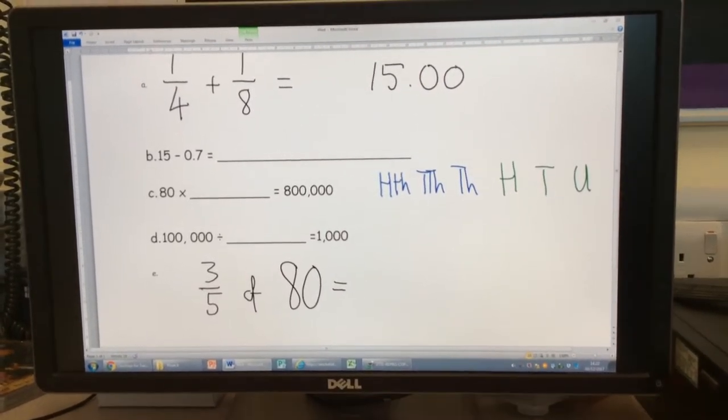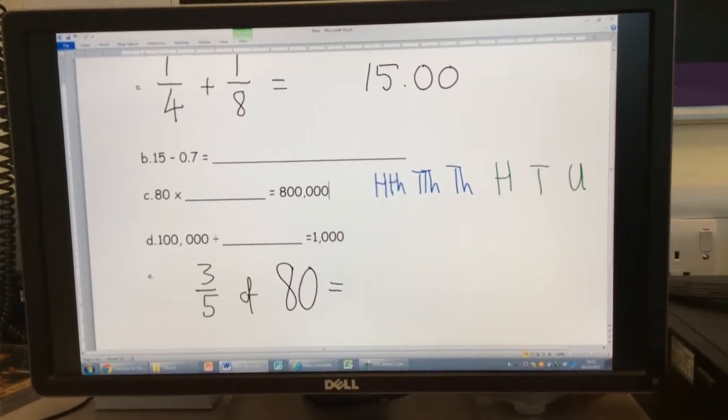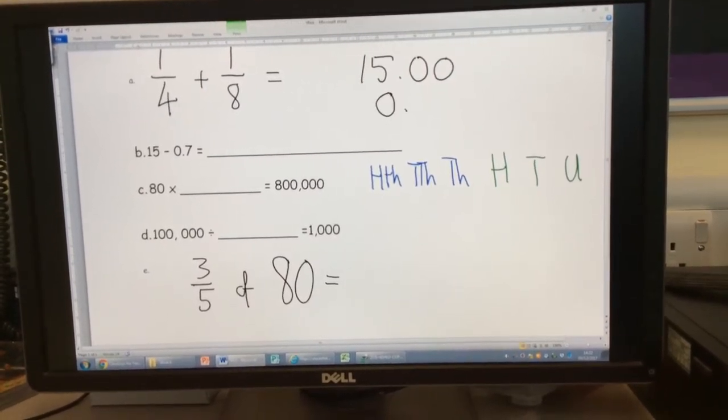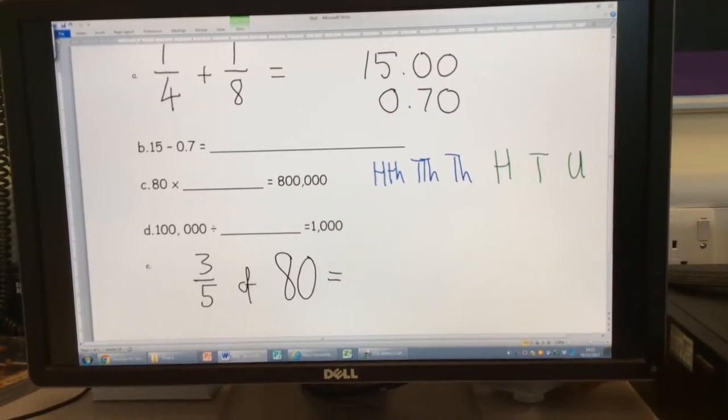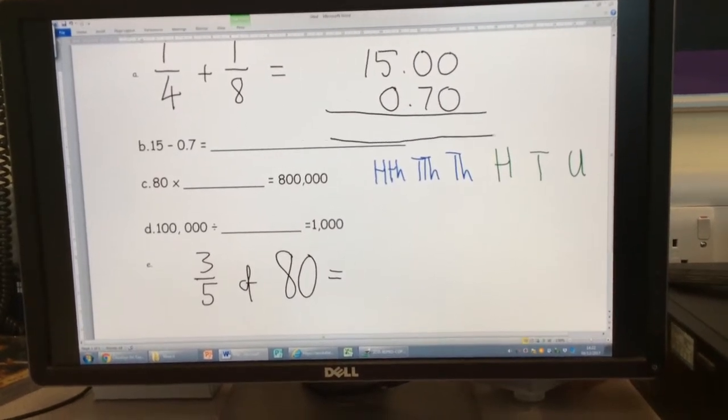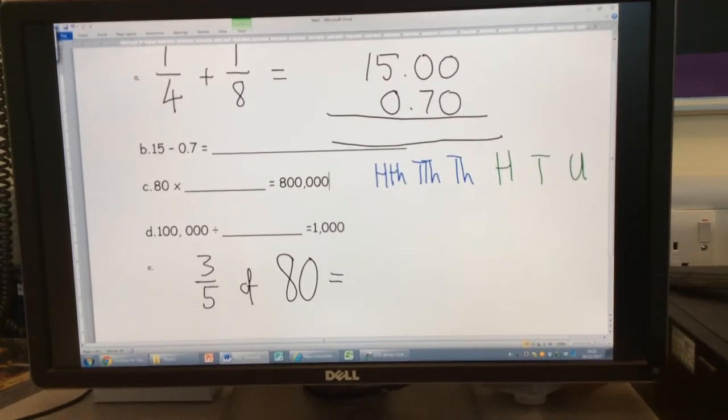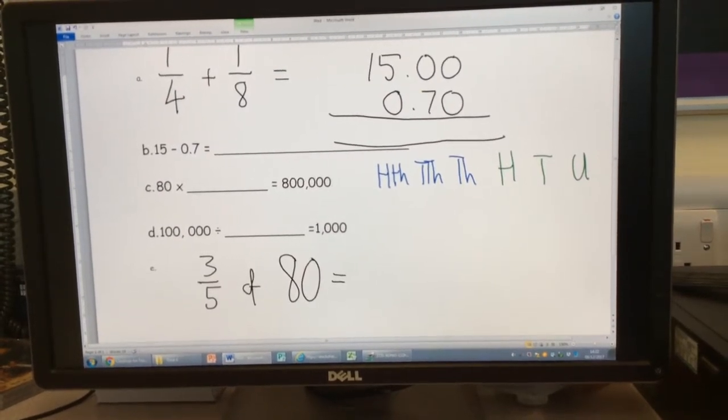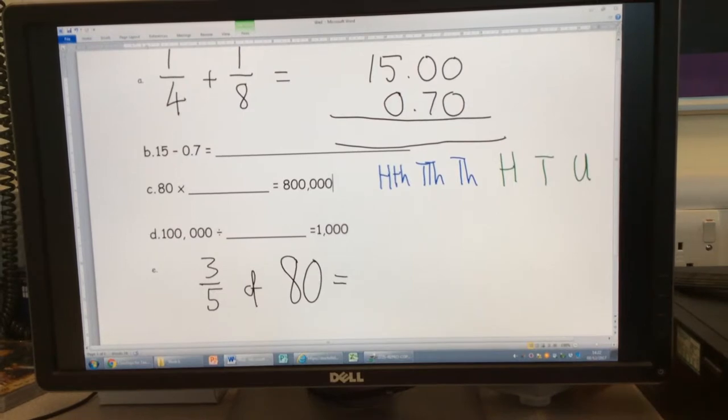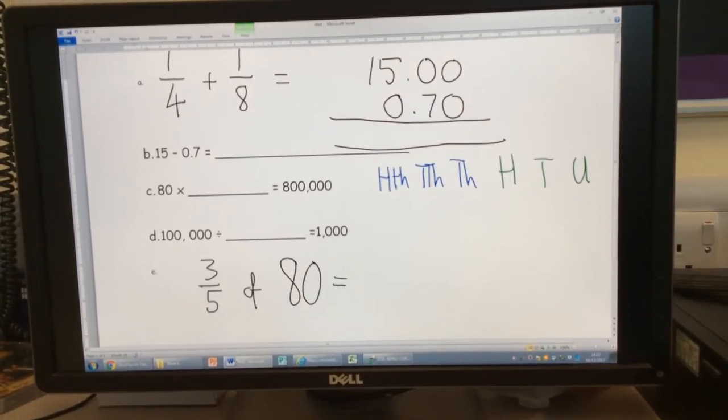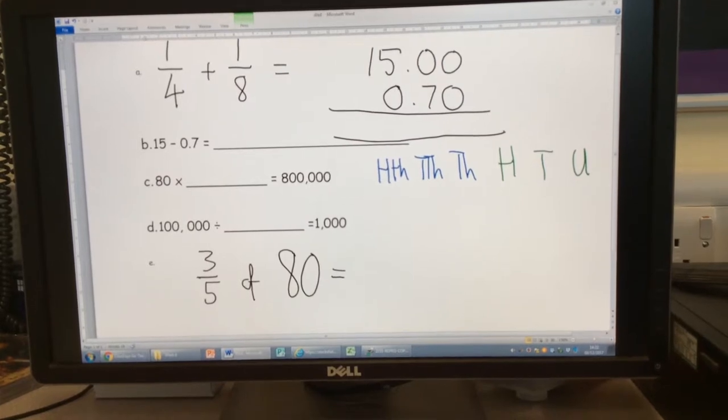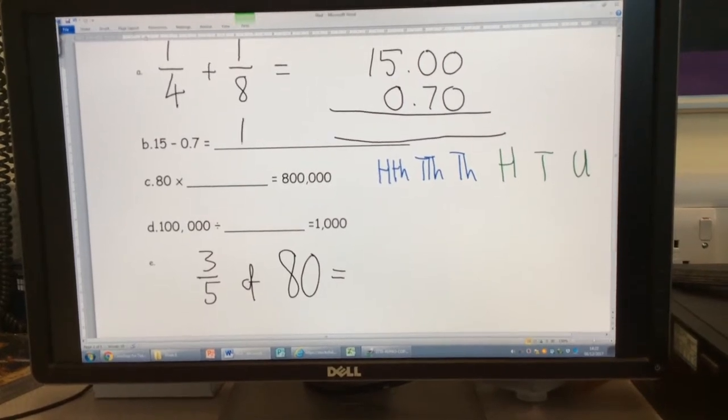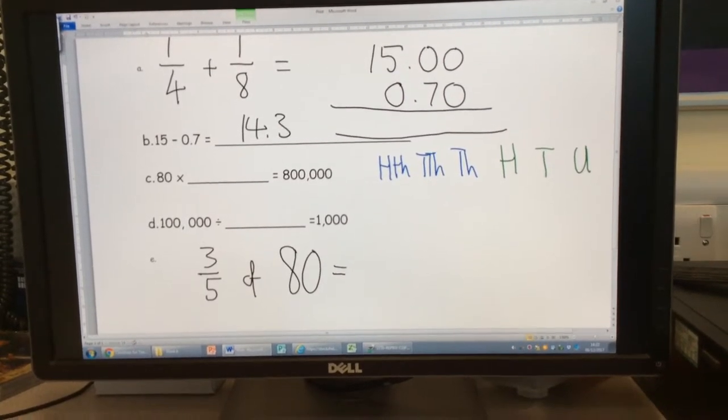So I've got 15.00, or 15 pounds, if we are pretending it is money. And Stephen, how are we going to write 0.7? I'm going to put a 0 under the 5 and you can put a 7. Excellent. Now it's a straightforward takeaway calculation. Many of you will be able to do this in your head. Does anybody want to tell me what it is? Rihanna? 14.30. Are we happy with that? Yes. Excellent. So we would write 14.30.